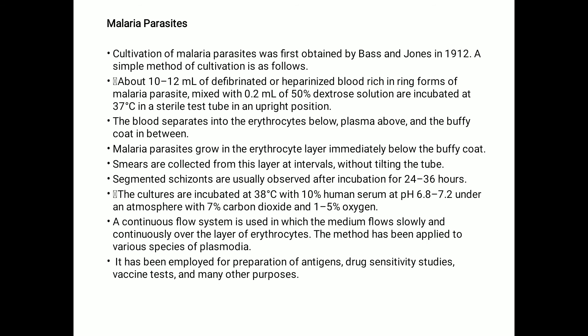The breakthrough in cultivation of malarial parasites came in 1976 when Trager and Jensen successfully maintained Plasmodium falciparum in continuous cultures in human erythrocytes using RPMI 1640 medium. These cultures are incubated at 38 degrees Celsius with 10% human serum at pH around 6.8 to 7.2 under an atmosphere of 7% carbon dioxide and 1 to 5% oxygen. A continuous flow system is used in which the medium flows slowly and continuously over the layer of erythrocytes. This method has also been applied to other Plasmodium species such as Plasmodium ovale and Plasmodium vivax.